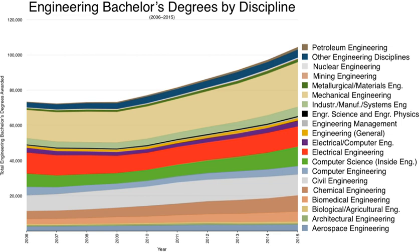Engineering degree education in Canada is highly regulated by the Canadian Council of Professional Engineers and its Canadian Engineering Accreditation Board (CEAB). There are 43 institutions offering 278 engineering-accredited programs delivering a bachelor's degree after four years. Many schools also offer graduate-level degrees in the applied sciences. Accreditation means that students who successfully complete the accredited program will have received sufficient engineering knowledge to meet the requirements for licensure as a professional engineer.